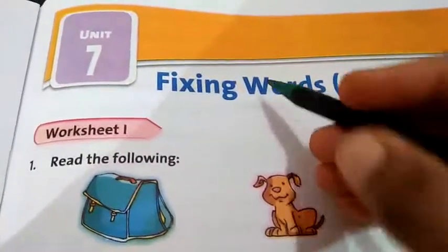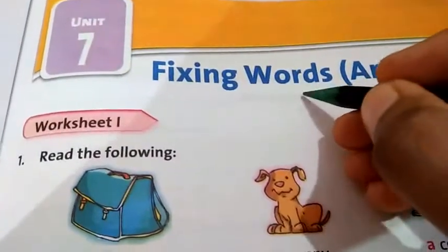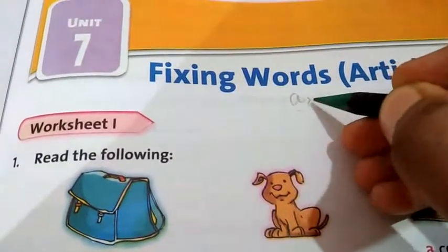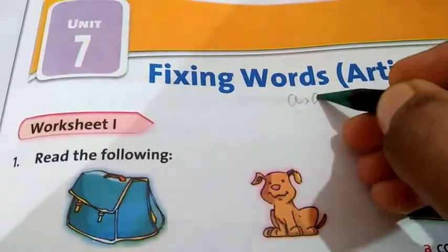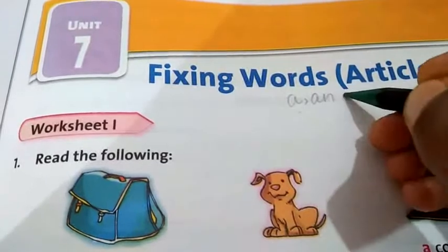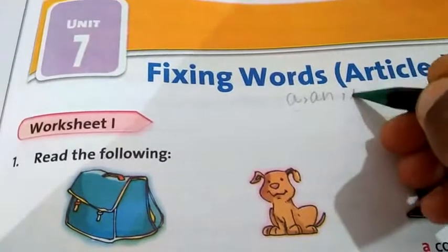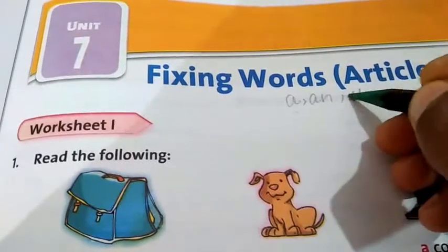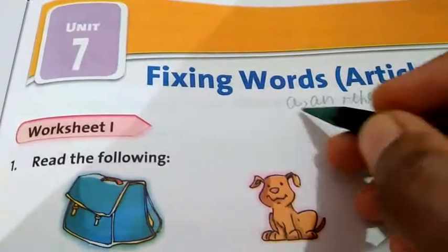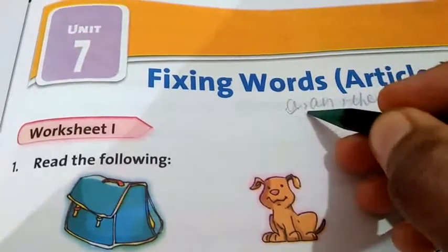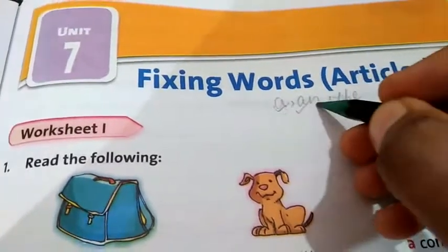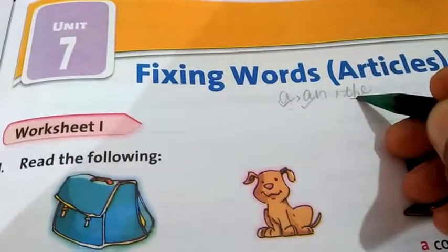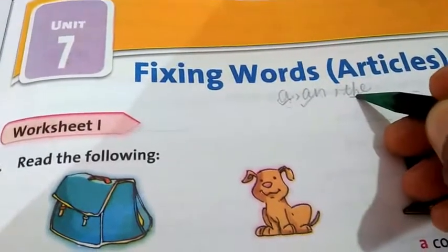A, AN, and THE are articles. Among these, A and AN are indefinite articles, and THE is the definite article.